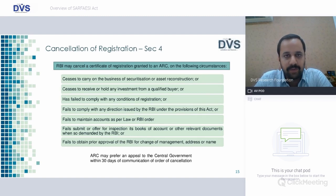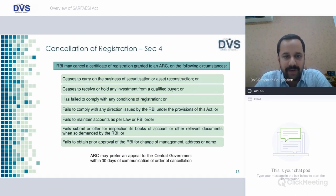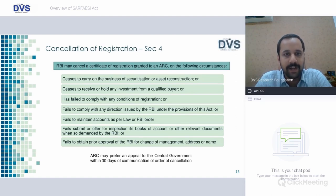Cancellation of registration — Section 4: RBI may cancel the certificate of any ARC if it ceases to carry on the business of securitization or asset reconstruction; ceases to receive or hold any investment from a qualified buyer; has failed to comply with any condition of registration; failed to comply with any directions issued by RBI; failed to maintain accounts as per law or RBI order; failed to submit or offer for inspection its books of accounts; or failed to obtain prior approval of RBI for change in management. ARC may prefer an appeal to the central government within 30 days from commencement of the order of cancellation.